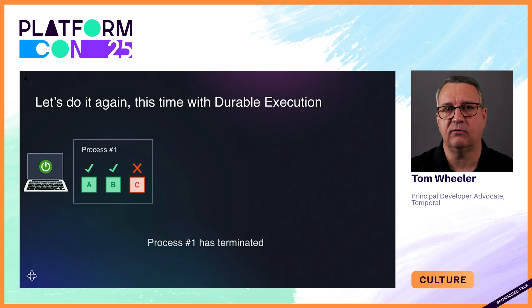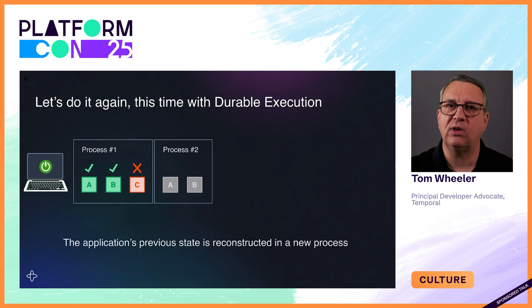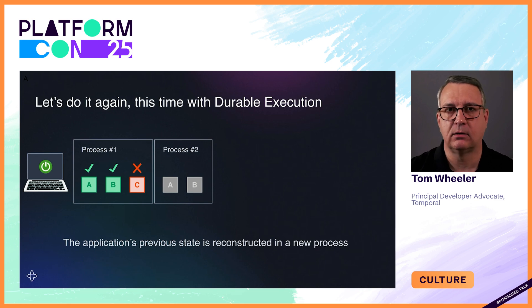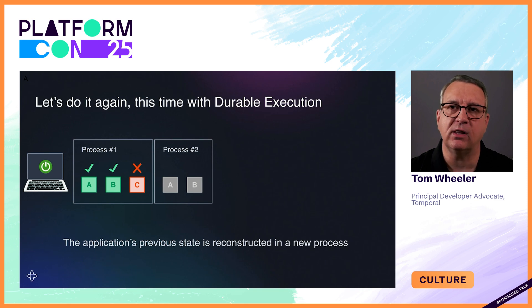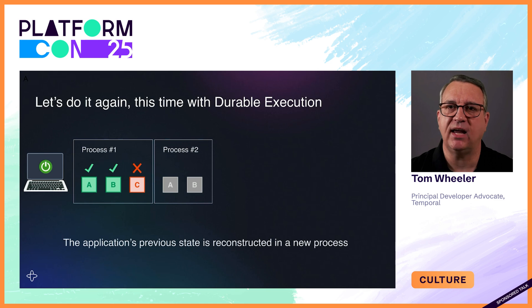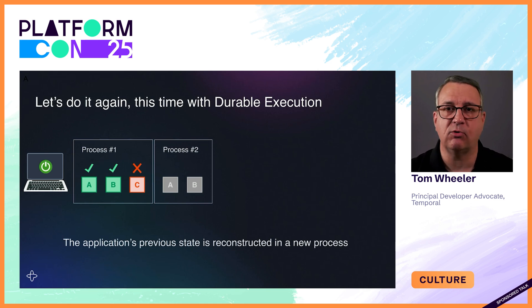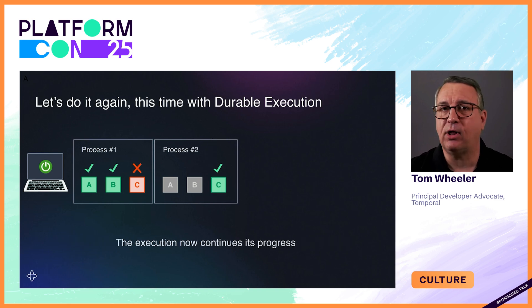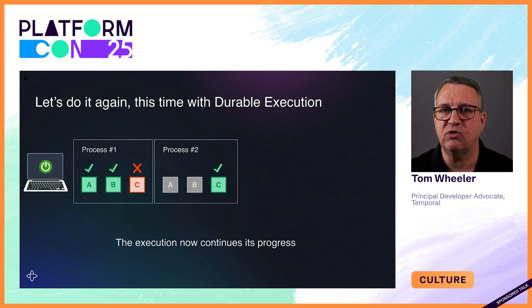But because we have durable execution, this is not the end of the story. Durable execution guarantees that the execution will continue with what comes next. The durable execution platform ensures that the work transparently resumes in a new process. The application state is automatically reconstructed in that new process so that variables have the same values as they did at the time of the crash, and the application will then continue running right from where it left off, without repeating the steps already completed before the crash.